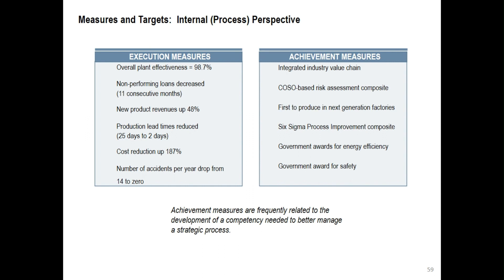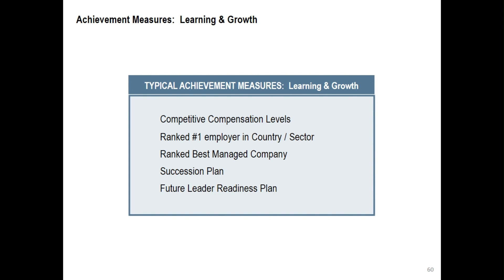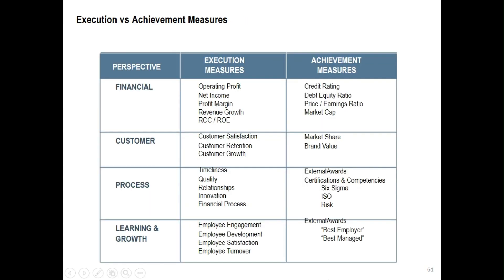Achievement measures are frequently related to developing a competency needed to better manage a strategic process. Typical achievement measures for learning and growth include: competitive compensation levels, ranked number one employer in country or sector, ranked best managed company, succession plan, and future leader readiness plan. You can look at the summary of both execution and achievement measures — can you identify execution and achievement measures for your organization?